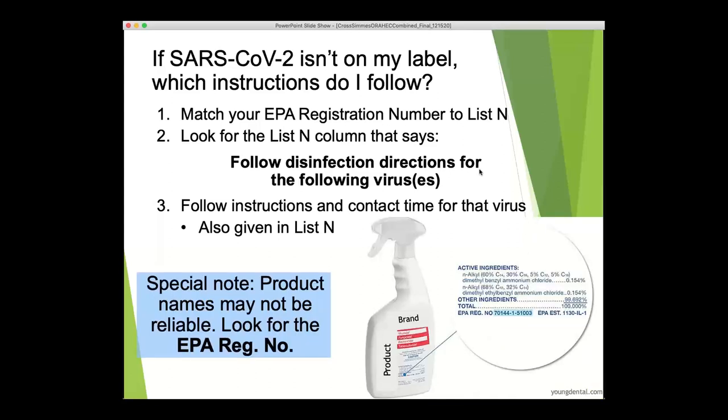Here's a visual example of what the EPA registration number looks like, highlighted in blue on the right-hand side. The name of the product can actually change from state to state and from registration to registration, so we really want to focus on that EPA registration number — it's a unique identification code for that product and the most useful piece of information aside from the label instructions.